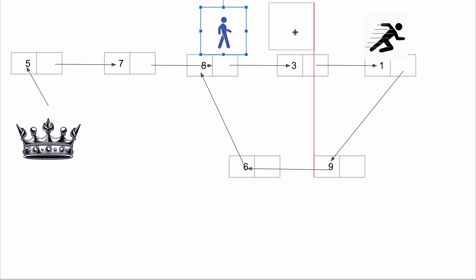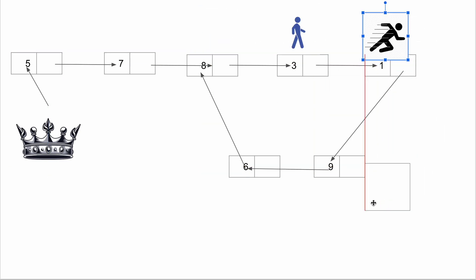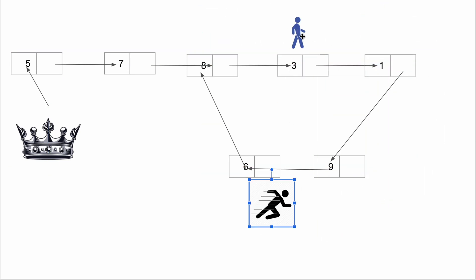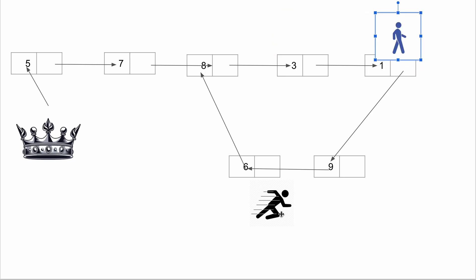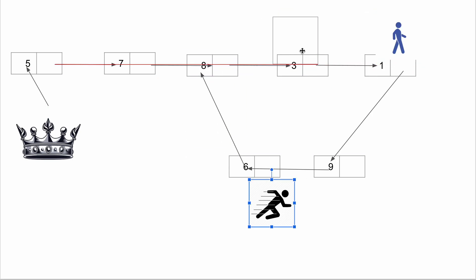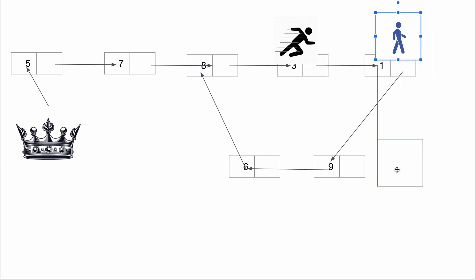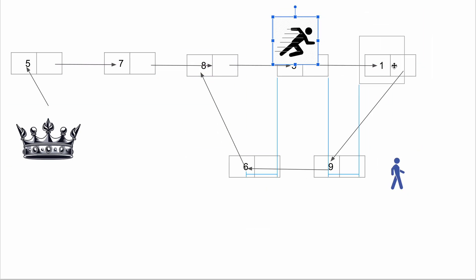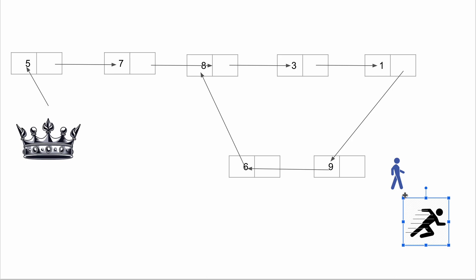So the slow pointer travels step by step, and eventually the next point is the point of contact — they meet, indicating there is a cycle. But this meeting point is definitely not the starting point of the cycle.